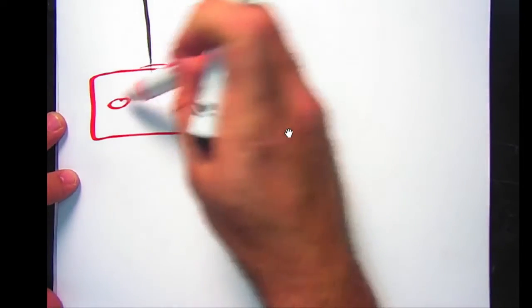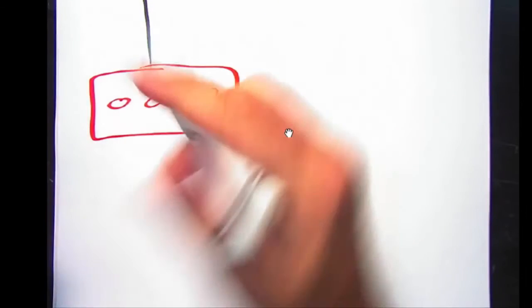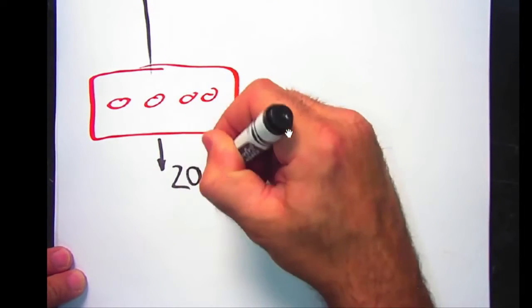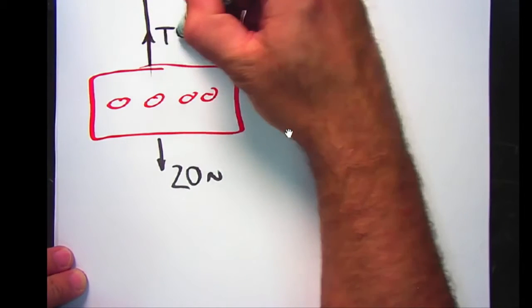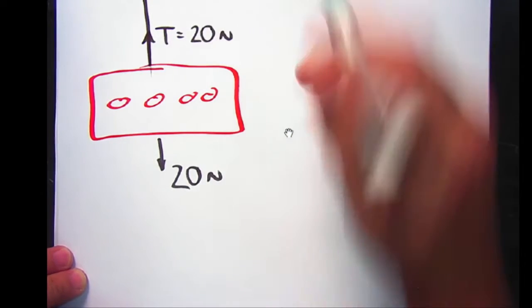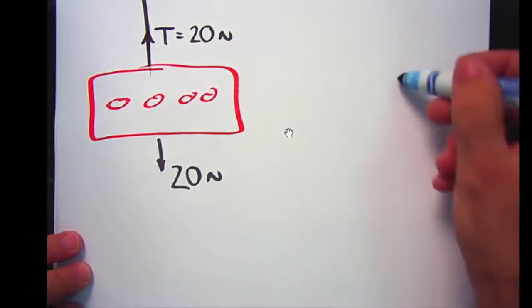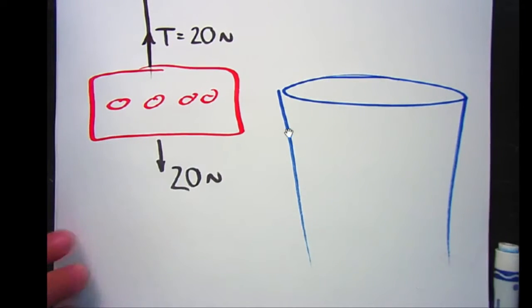Alright, we saw just a second ago that when we put a brick in a bucket of water, it seemed like 9 newtons disappeared. Let's see if we can figure out where that was. We had a string with a brick tied to it, and we found out that it had a weight of 20 newtons. That meant the string had to pull back up with a tension of 20 newtons to hold it in place. When we put it in a bucket of water, something mysterious happened.